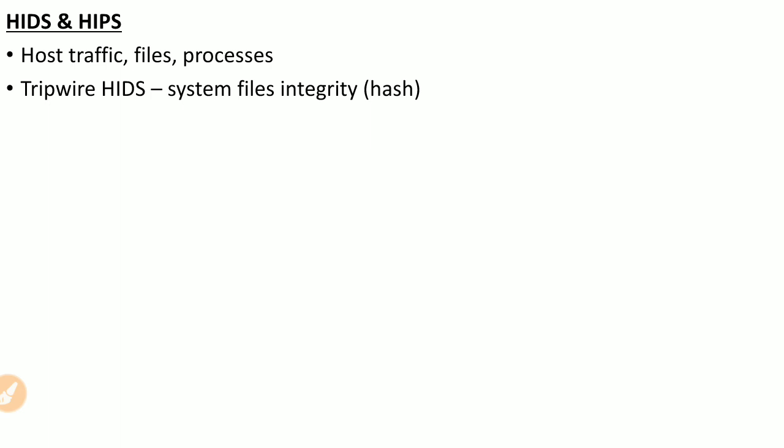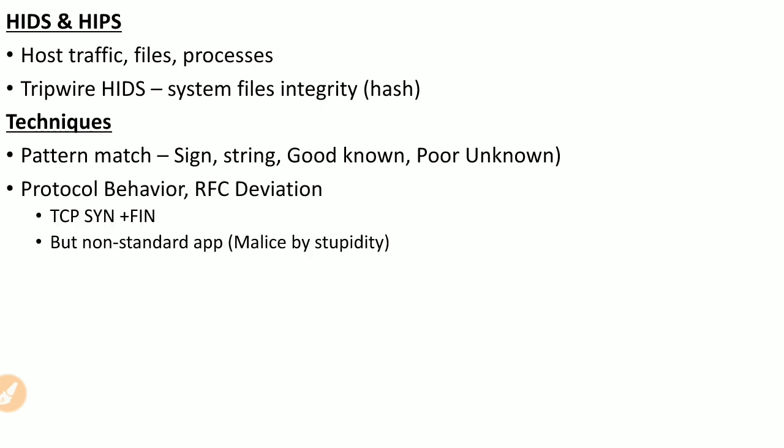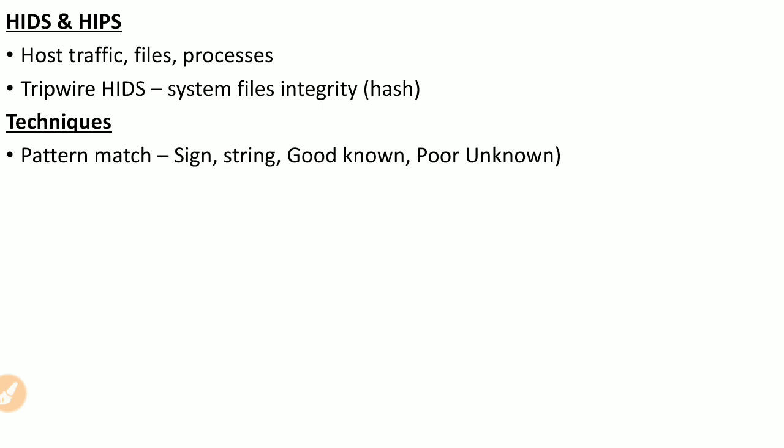IDS and IPS use several detection techniques: pattern matching, protocol behavior analysis, and anomaly detection. In pattern matching, you look for static signatures of malicious attacks — for example, a specific string or domain. If that string is found in traffic, it is declared malicious and an alert is generated or the IPS blocks it. This technique works well for known attacks but is poor against unknown attacks since there is no signature for them.